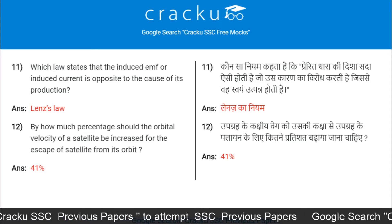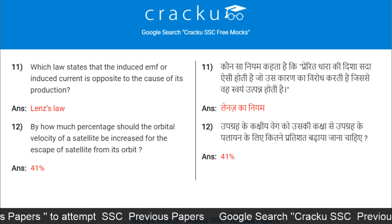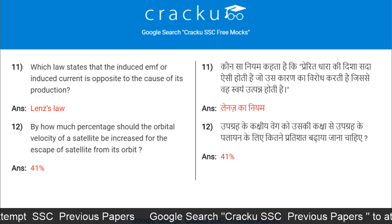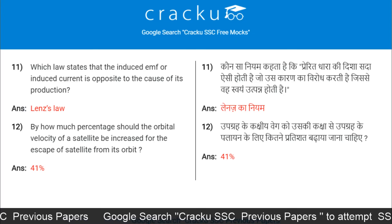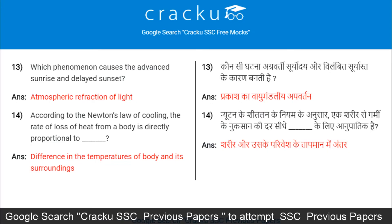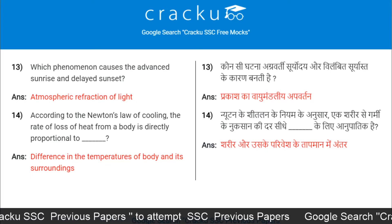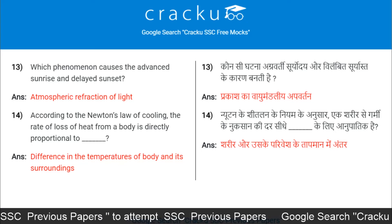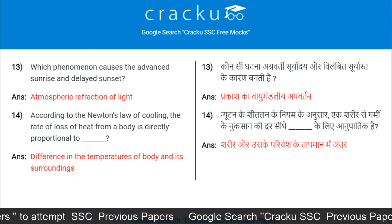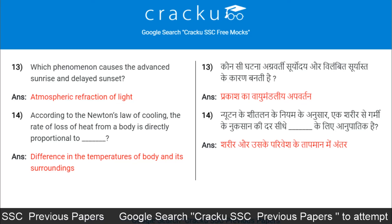By how much percentage should the orbital velocity of a satellite be increased for the escape of satellite from its orbit? 41%. Which phenomenon causes the advanced sunrise and delayed sunset? Atmospheric refraction of light.